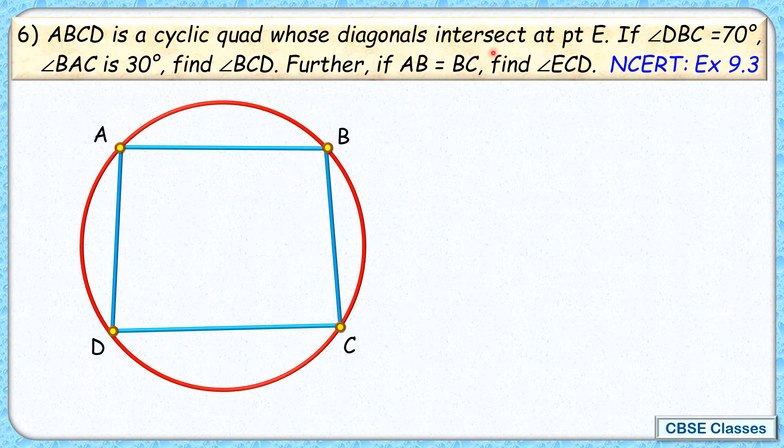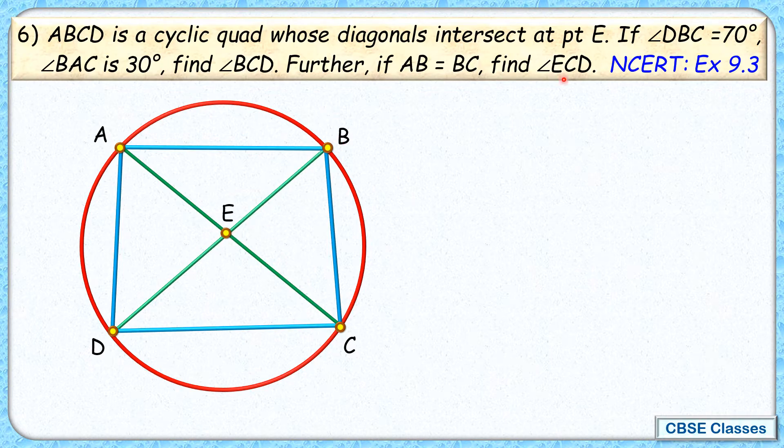Whose diagonals intersect at point E. So diagonal AC and diagonal DB intersect at point E here. Angle DBC is 70 degrees. So this angle DBC, this angle here is given as 70 degrees.